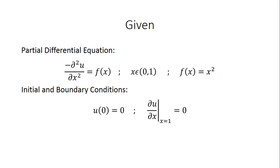Today we are going to be talking about exact and approximate solutions. This is the problem we are going to be looking at. We are given a partial differential equation: the negative second partial derivative of u with respect to x equals f of x, where f of x equals x squared and x goes from 0 to 1.